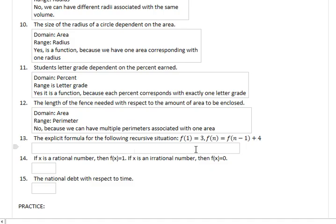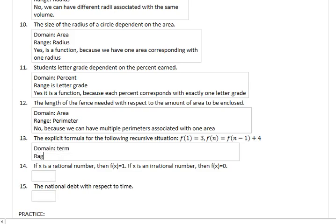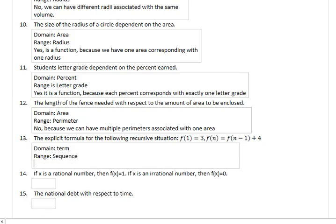The explicit function for the following recursive situation: my first term is 3, to find my next term I take the previous term and add 4. Our domain is what term we're on, and the range is this arithmetic sequence. The question we need to ask is: can we have term 3 be 5 and 6 at the same time? And the answer is no. Each term is exactly one number, which means yes, it is a function, because each term has exactly one value.